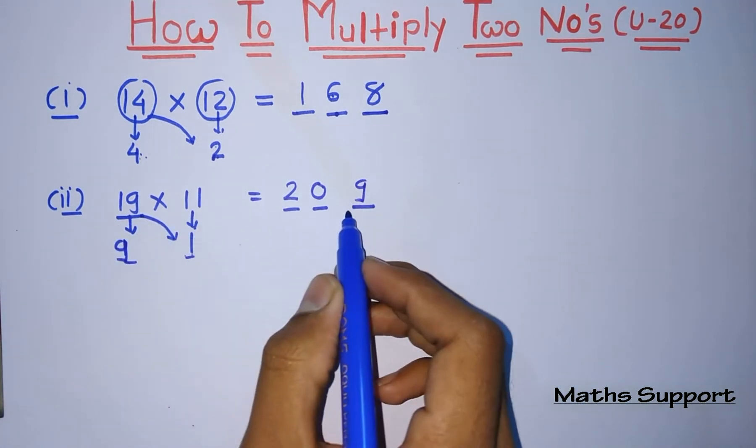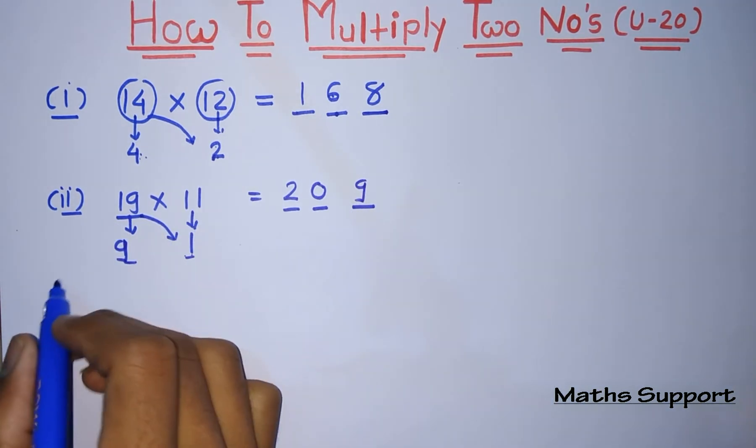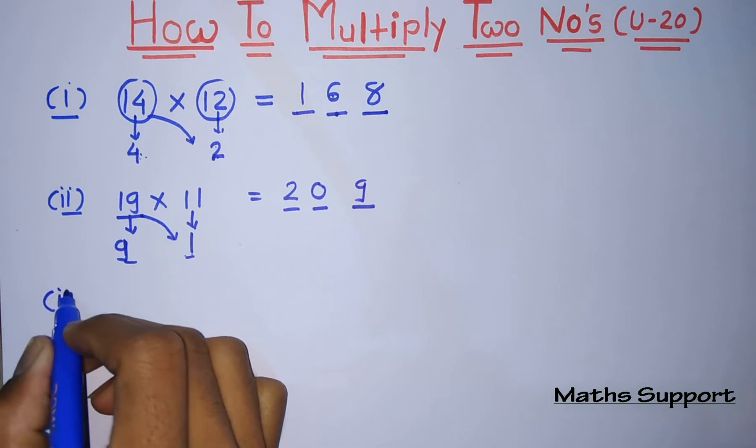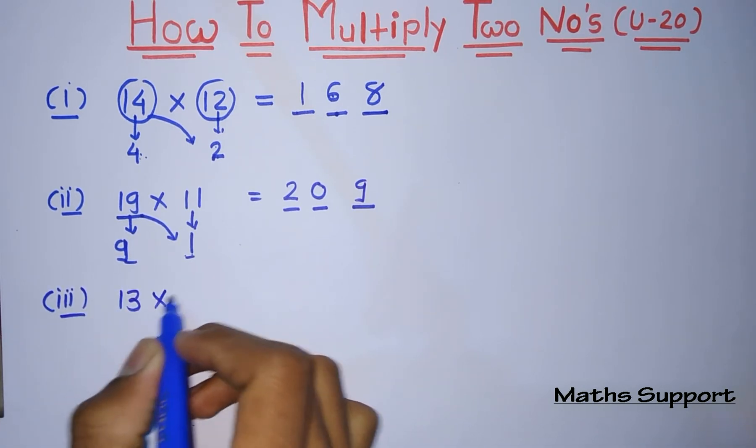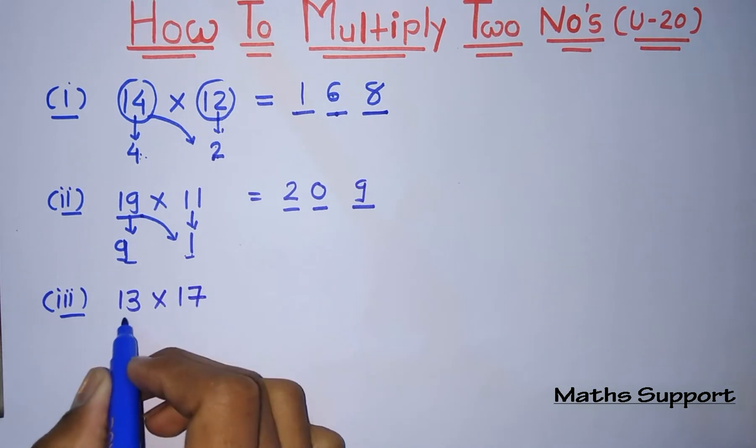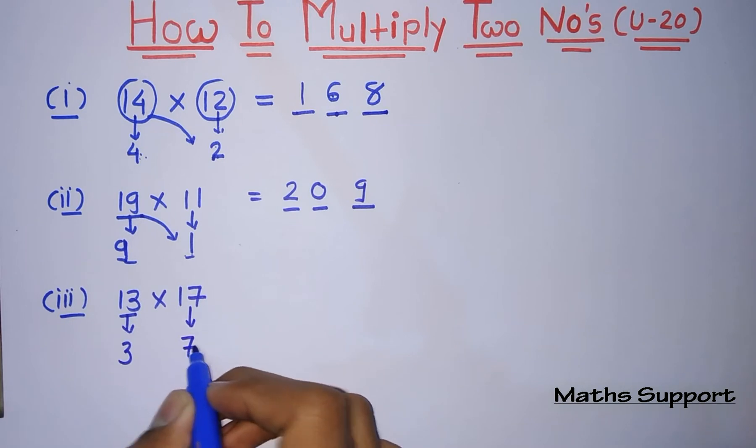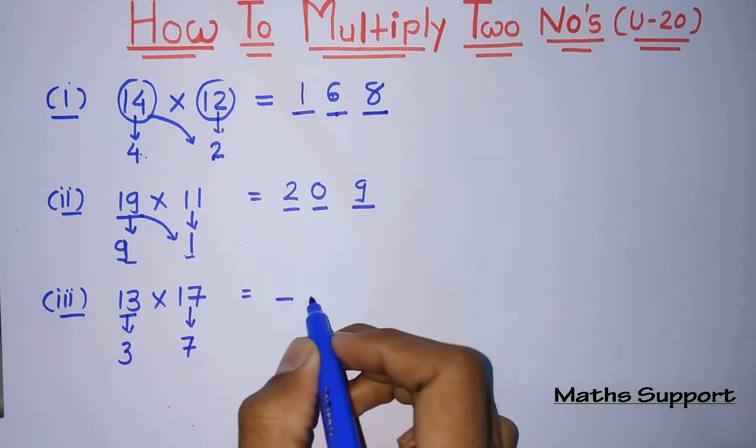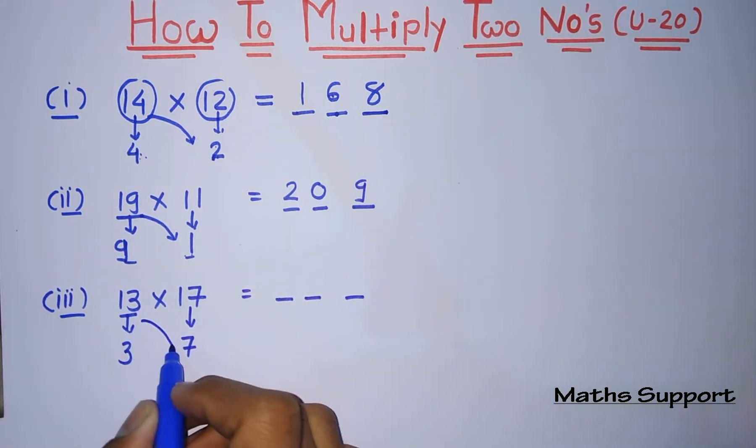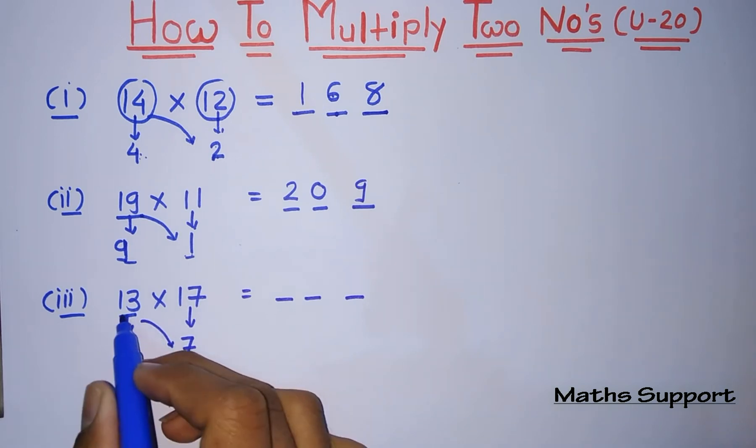Suppose you are multiplying 13 into 17. So the first thing, this is 3 from 10 and this is 7 from 10. Now for the first two digits, add these two numbers. So this is 13 plus 7, that is 20.